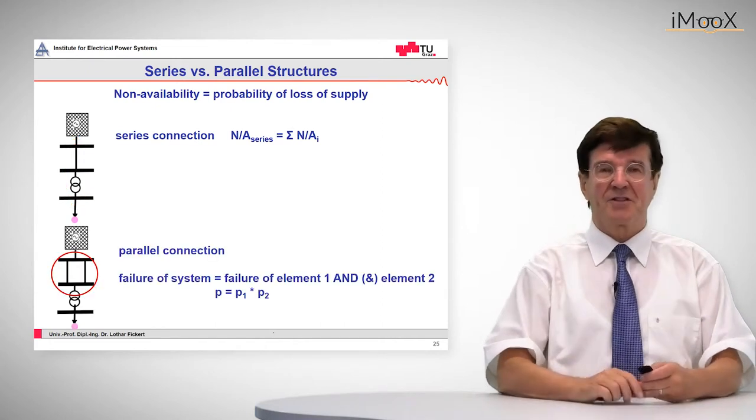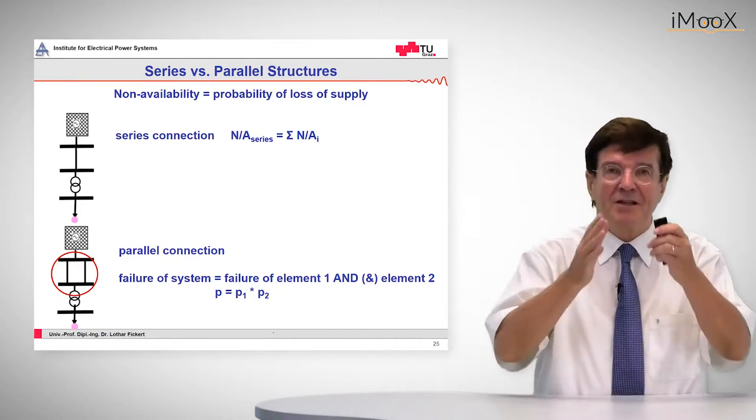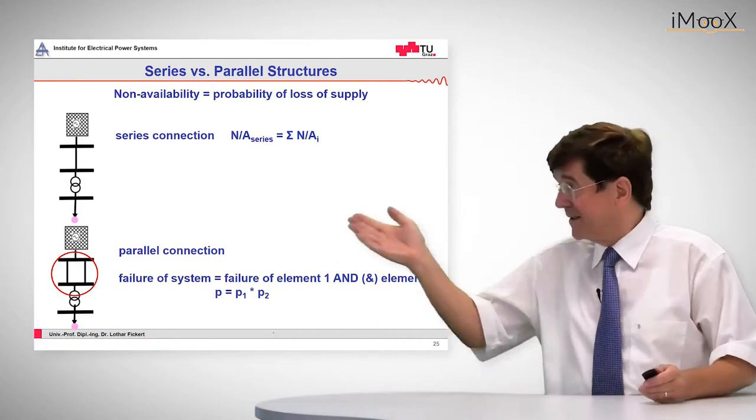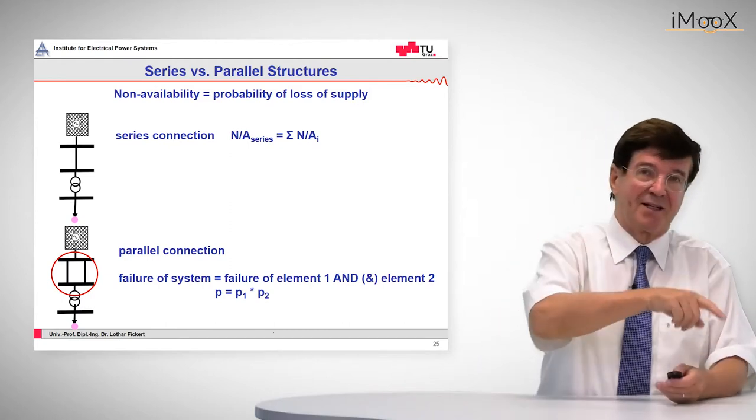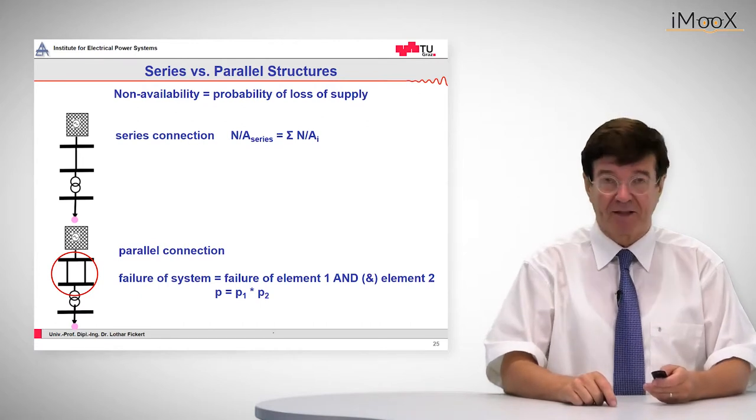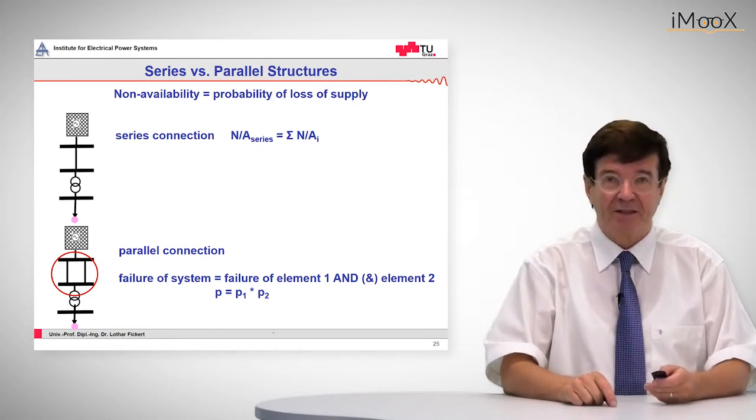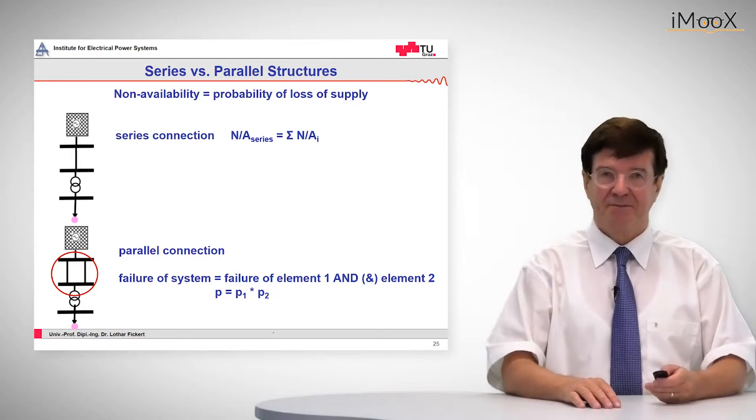In contrast, to apply the n minus 1 principle, we double lines as indicated here. The system now fails if both lines 1 and 2 fail. The product is the relevant quantity of the failure of these two parallel entities.